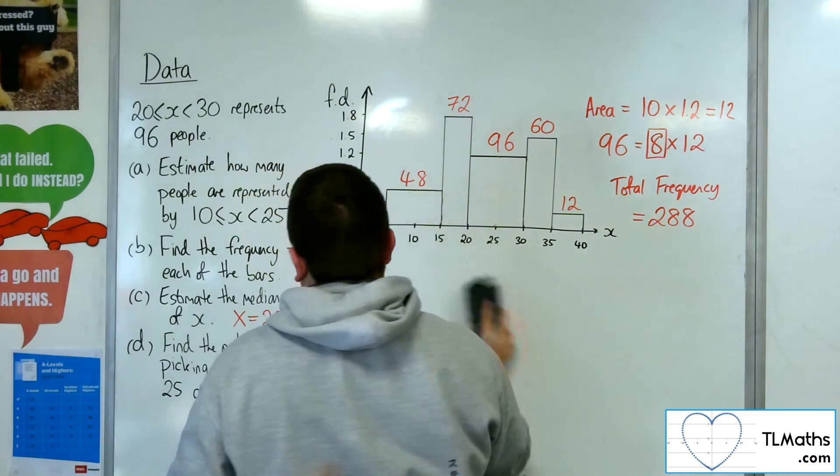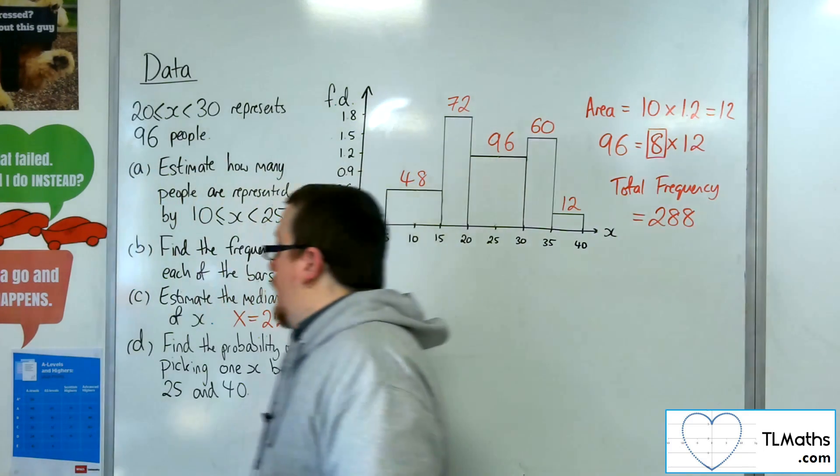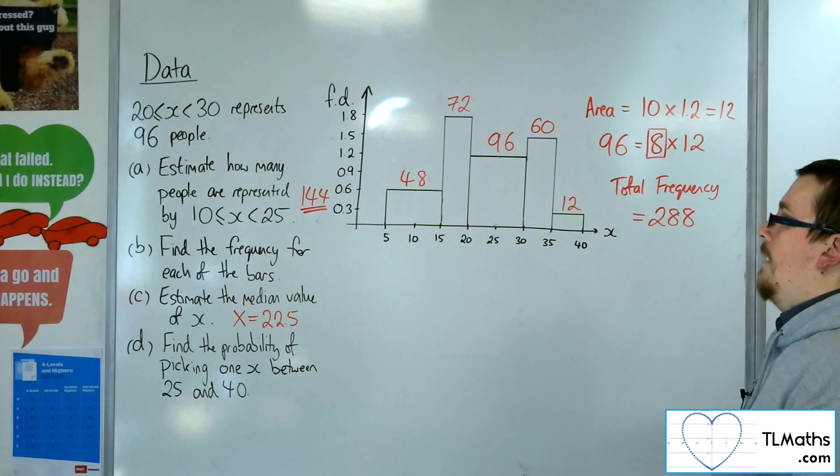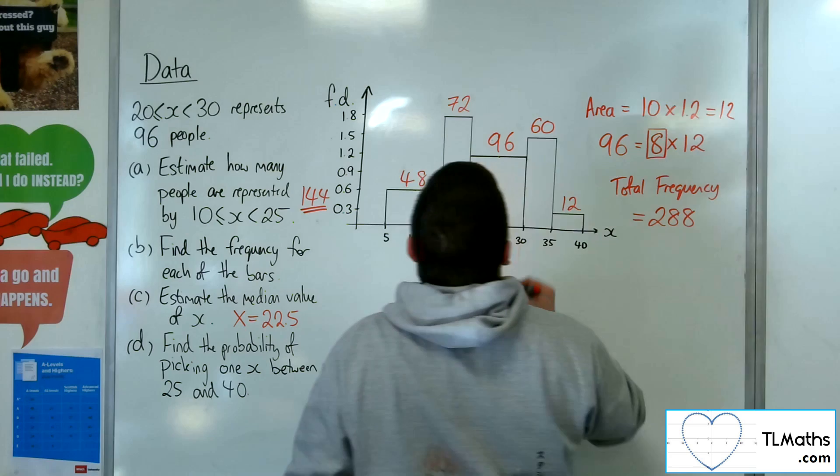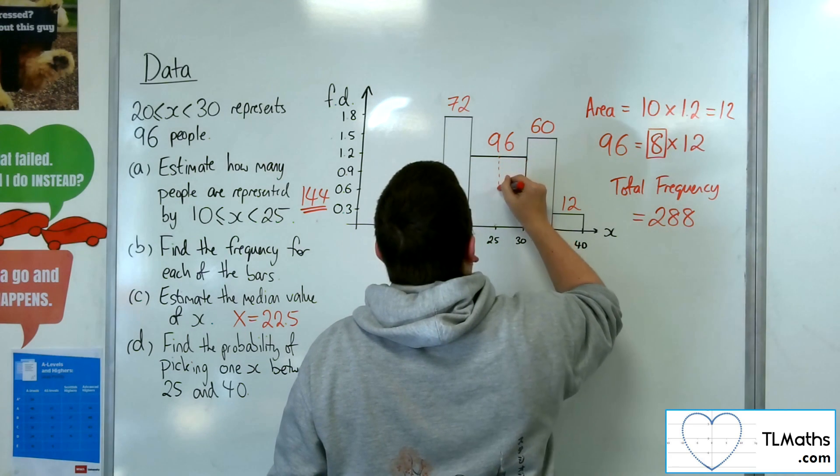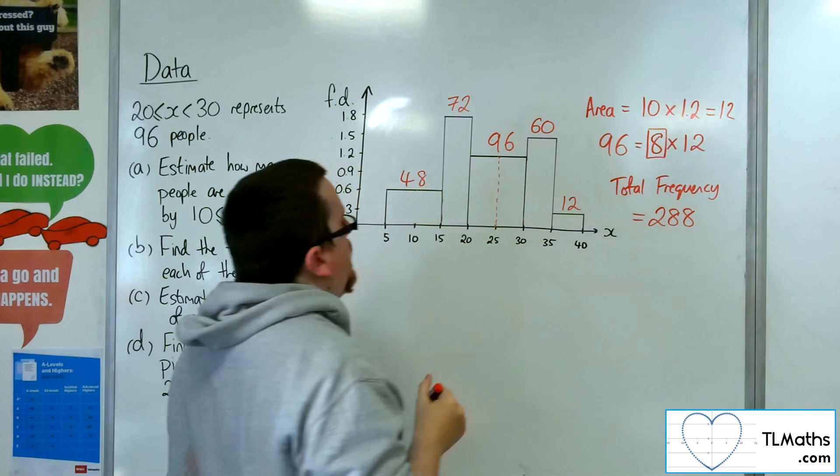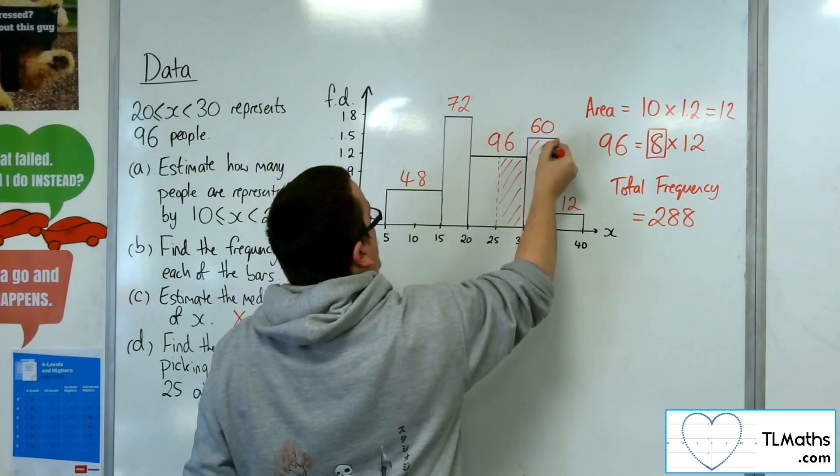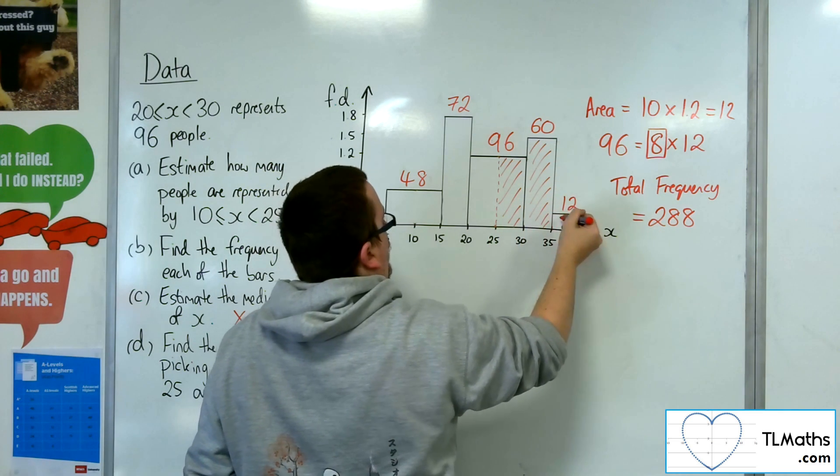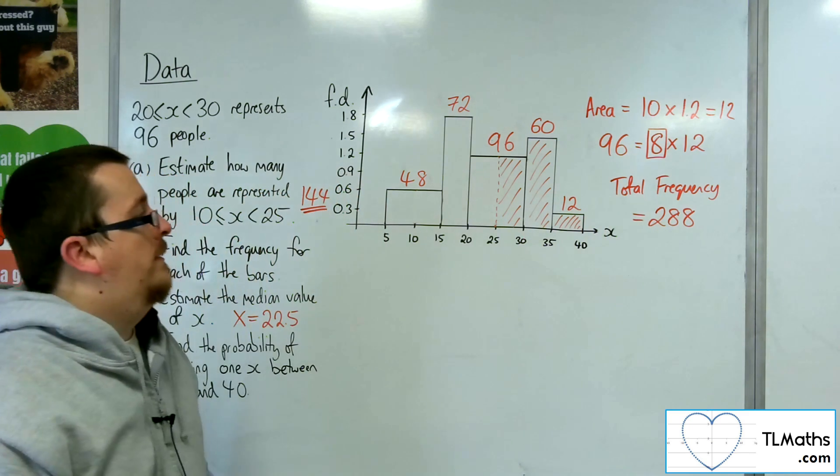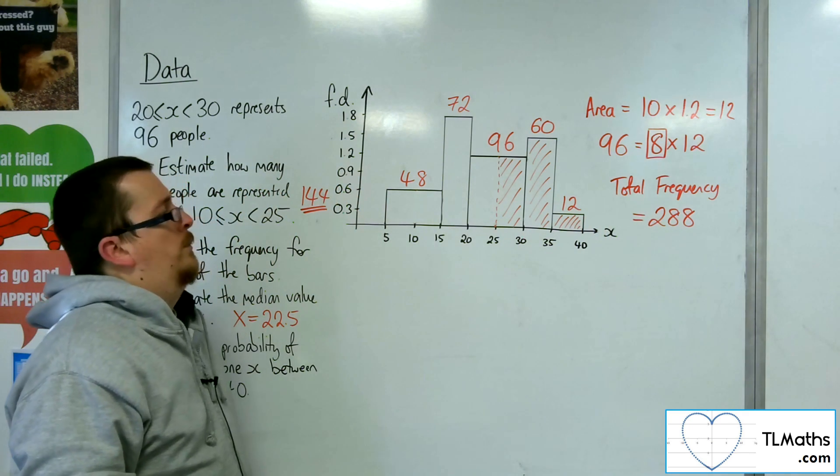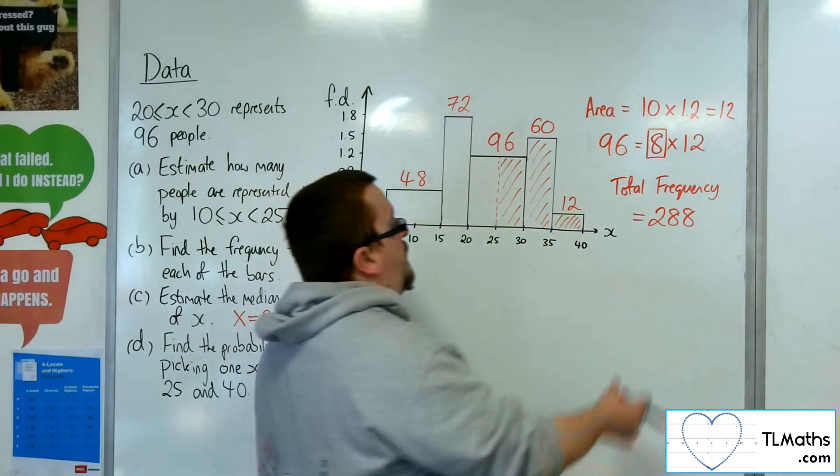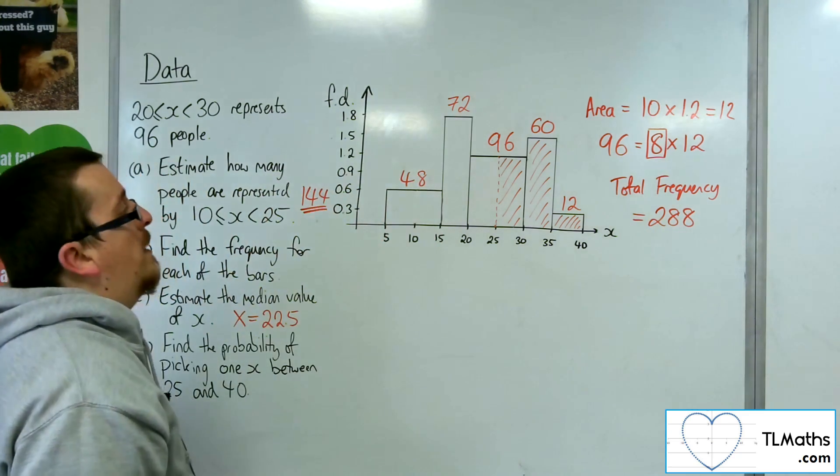So last but not least, find the probability of picking one X between 25 and 40. So 25 and 40, that's asking me to figure out that area, effectively to find out that frequency, and then divide it by the 288, and that should give me my probability.